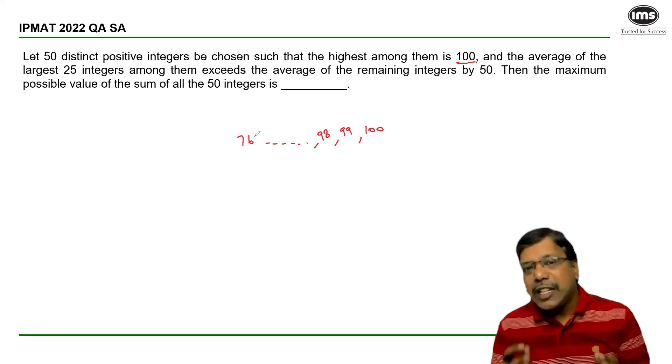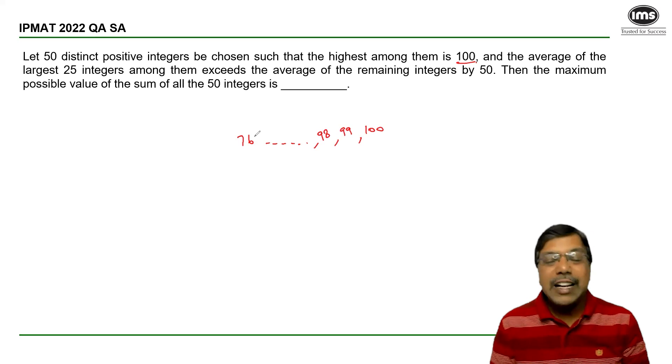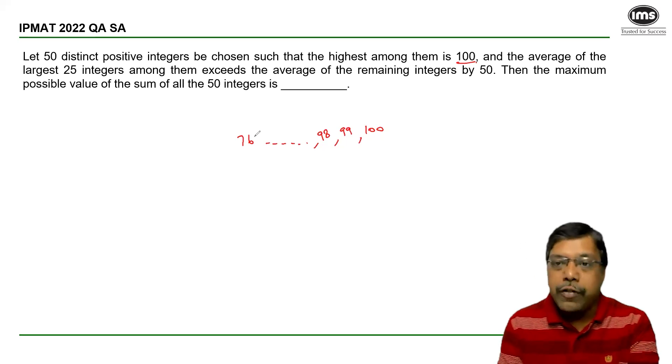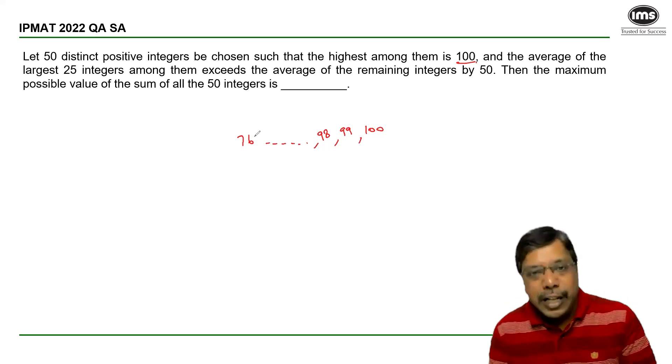When we have a set of consecutive numbers, we know very well that the average will simply be the middle value.